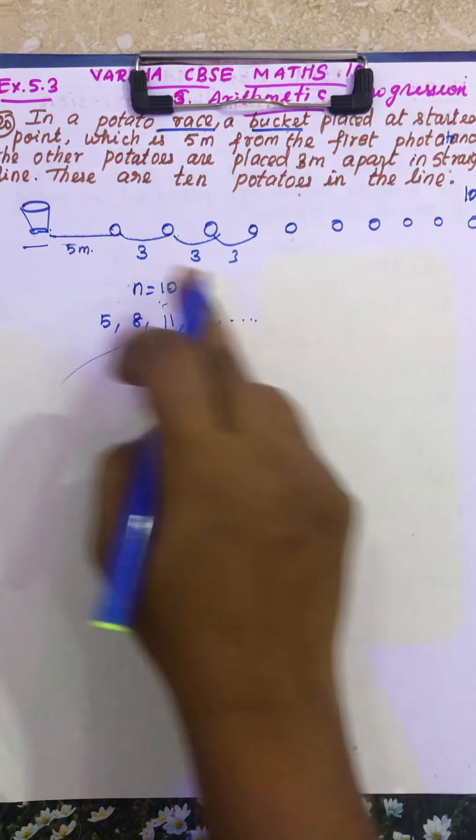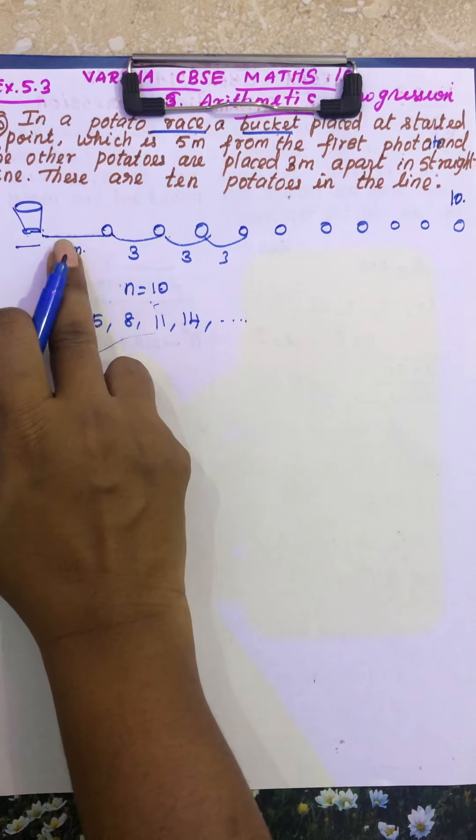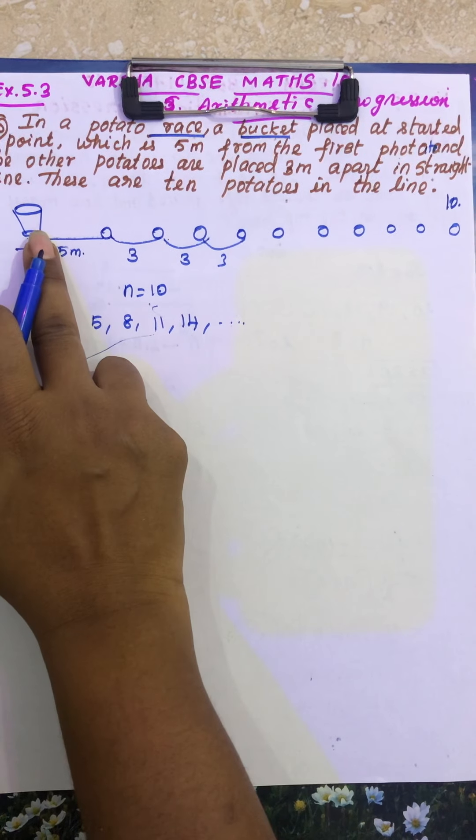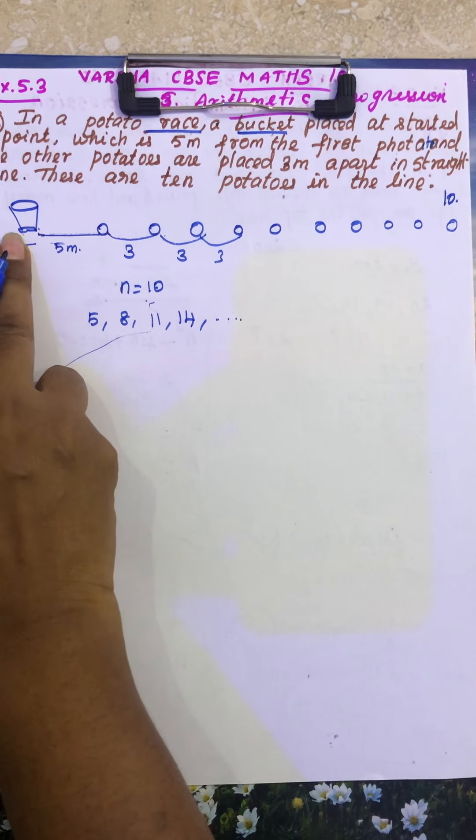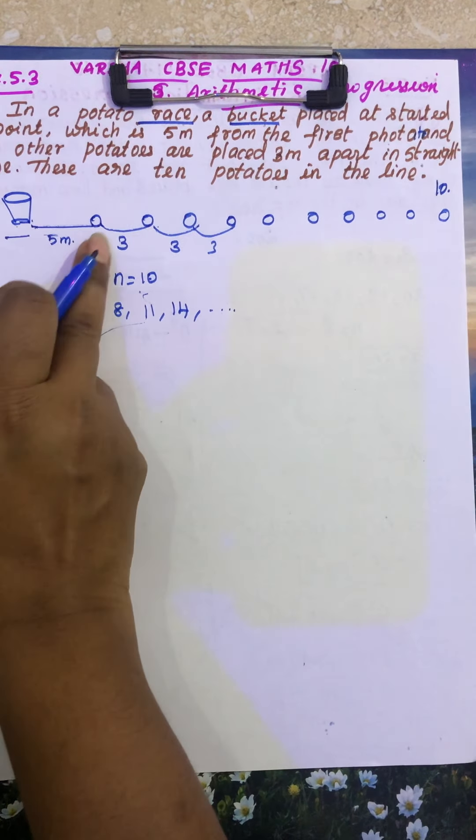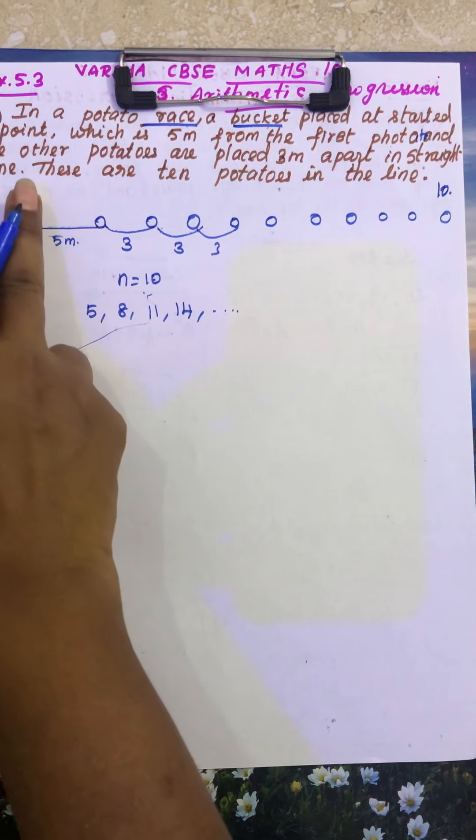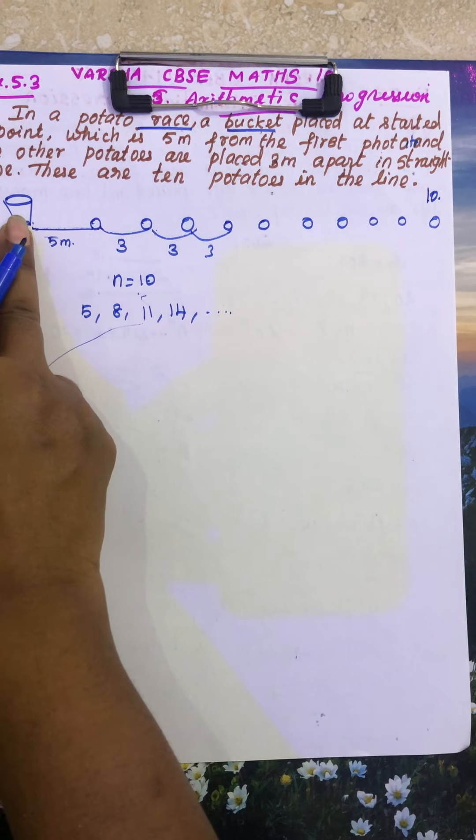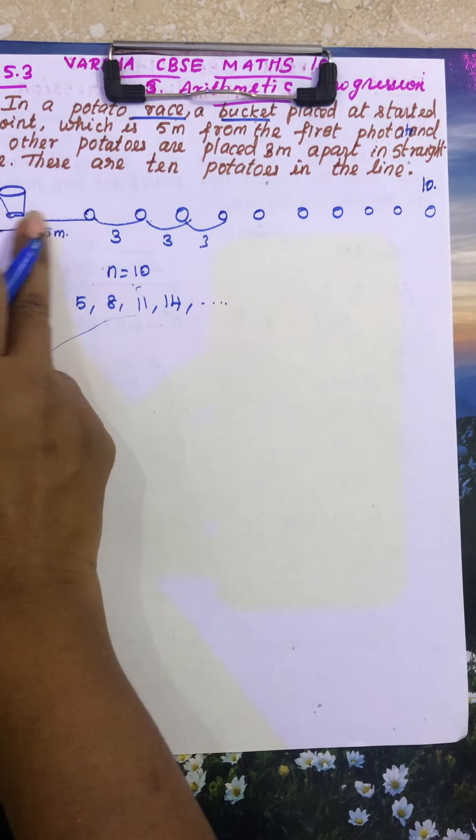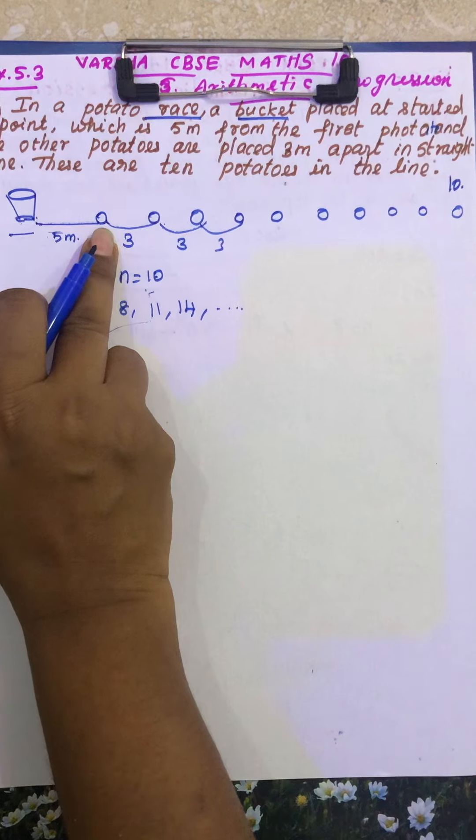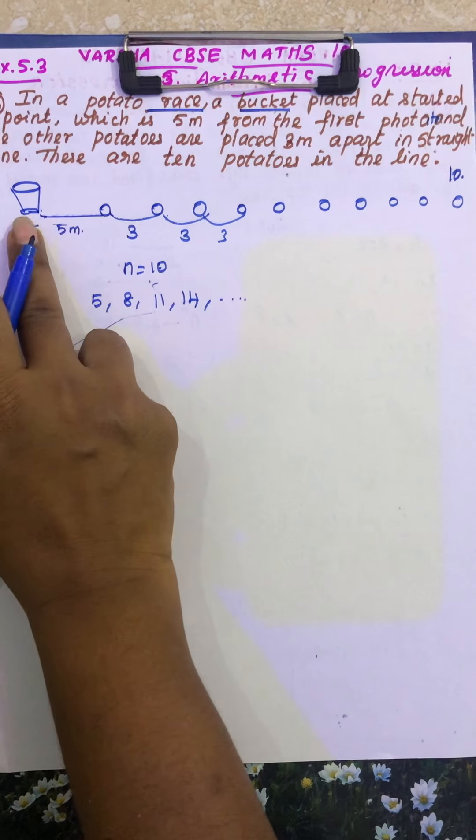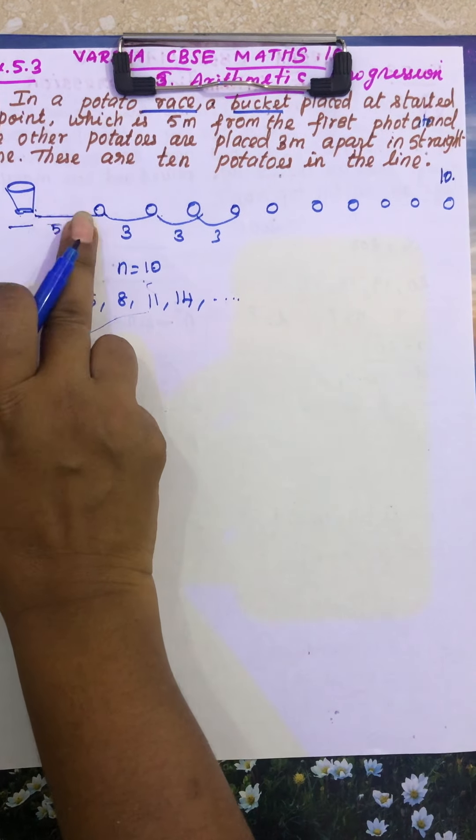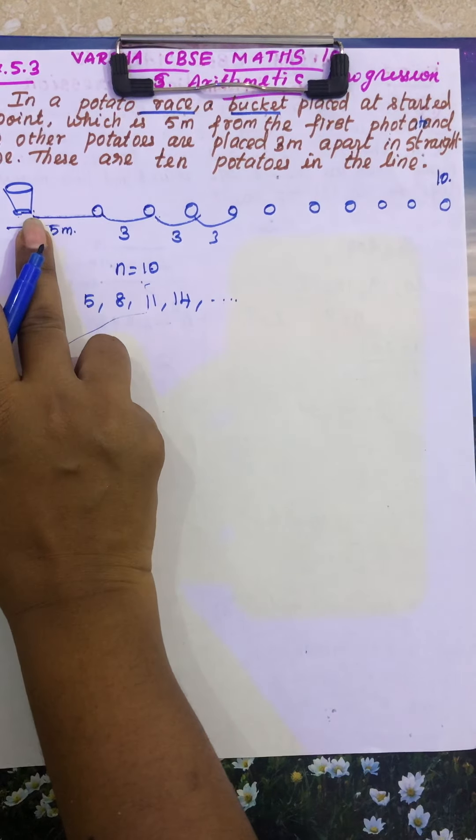So in this question, a girl is going, a competitor. She has started here from the bucket, she has to take the potato and come to put in the bucket, so she has to pass how many distance students. She has to come here to the potato and she goes back, so she has to pass 10, 10 meters.